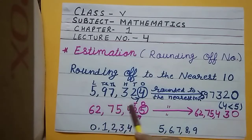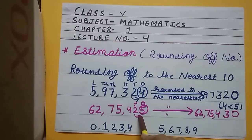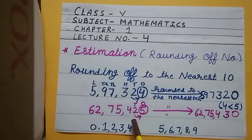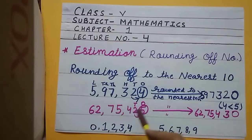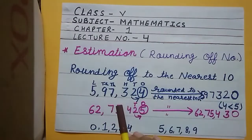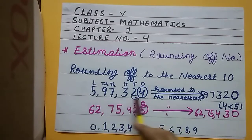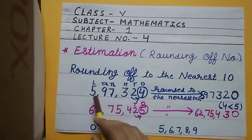The second rule is: if the digit in the ones place is greater than or equal to 5, then replace the ones digit by 0 and increase the tens place by 1. Write the remaining digits as it is.